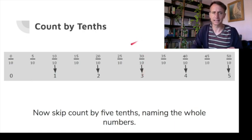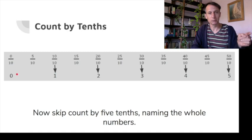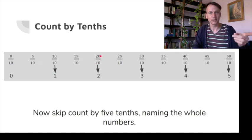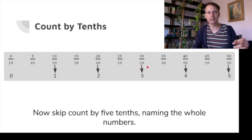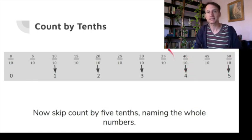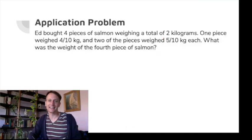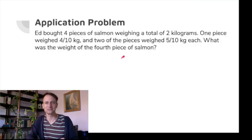To relate this to money: a tenth of a dollar is a dime. No dimes means no money. Ten dimes is one dollar. Twenty dimes is two dollars. Thirty dimes is three dollars. Forty dimes is four dollars. Fifty dimes is five dollars — lucky you with your five dollars.